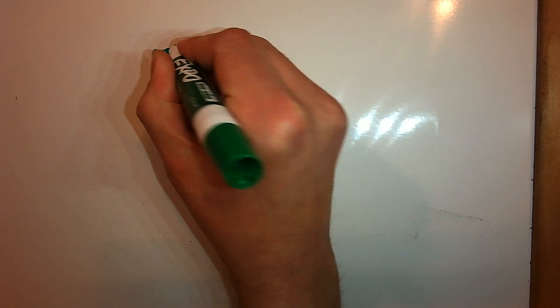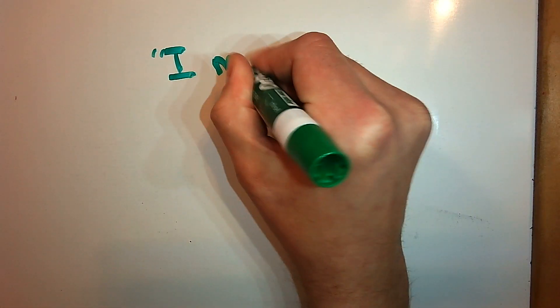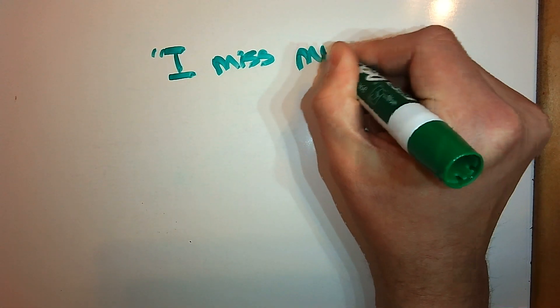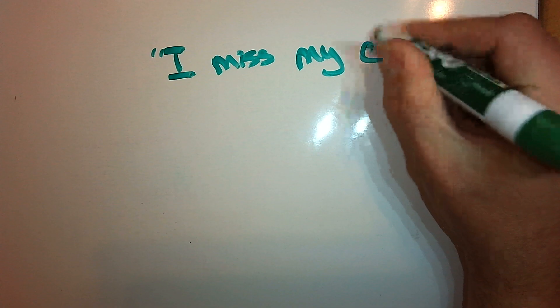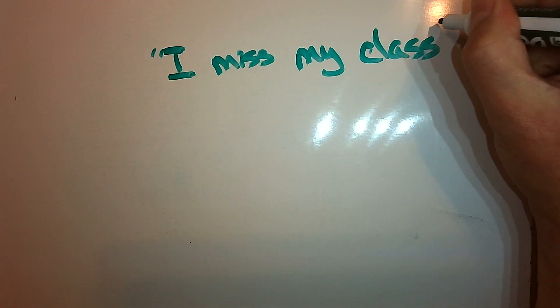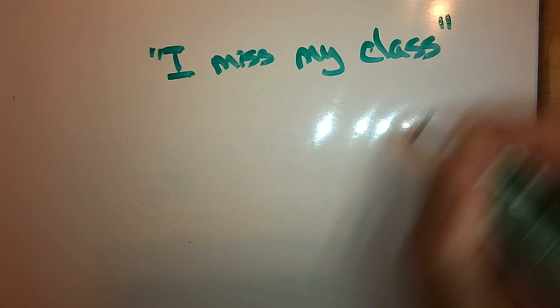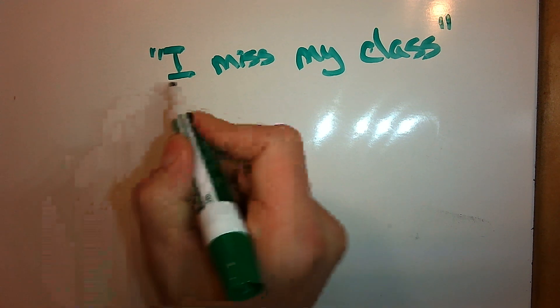I'm just going to pretend I'm the character. I miss my class. So that's what I am saying. Notice how I have the opening quote and then the closing quote, but I have to then put an attribution, which means I have to say who's saying this.